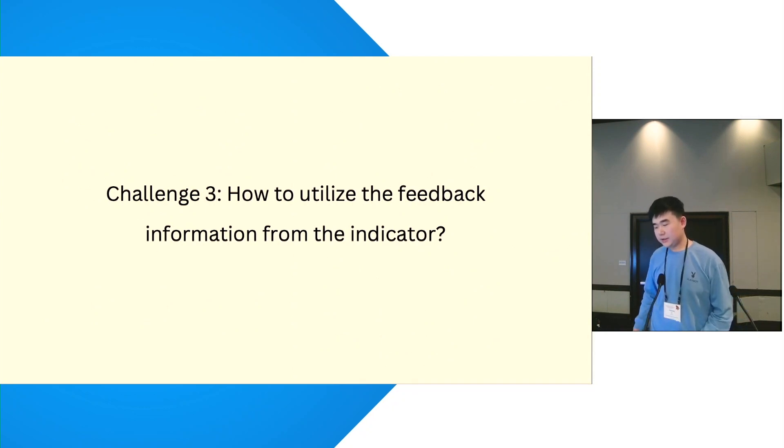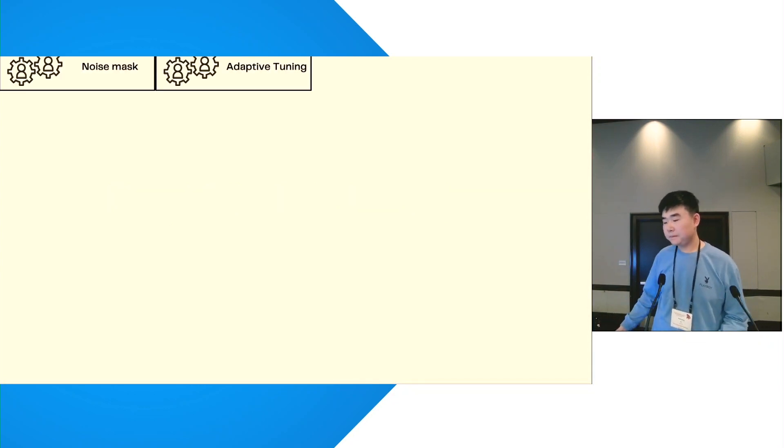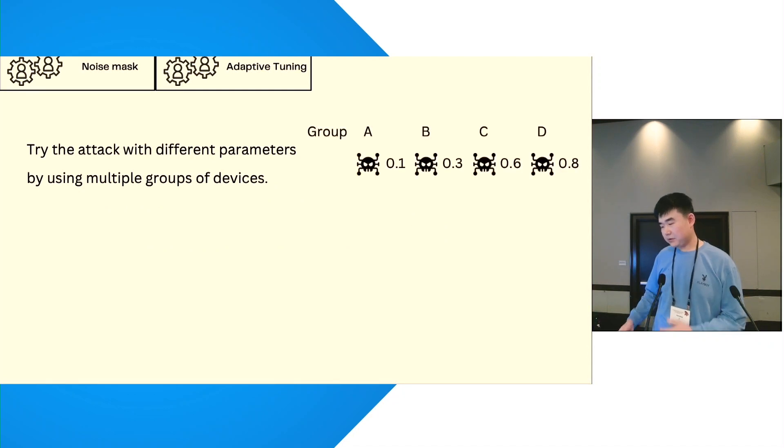There's one more step to go, which is how to utilize the feedback information from the indicator in order to know the parameters we want to guess. Let's represent the noise magnitude we want to infer as a single floating point value.